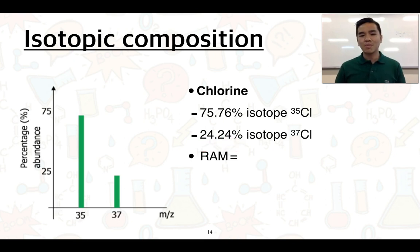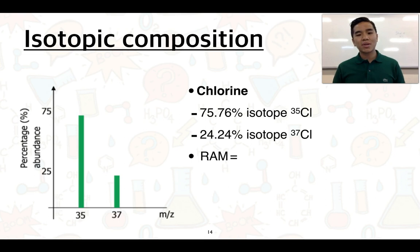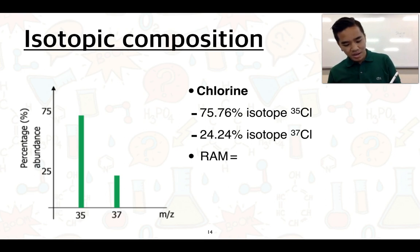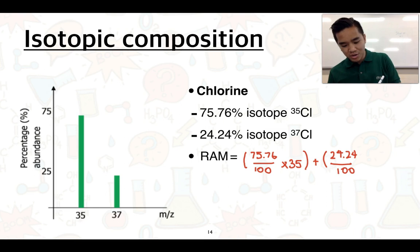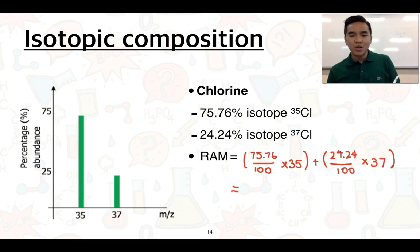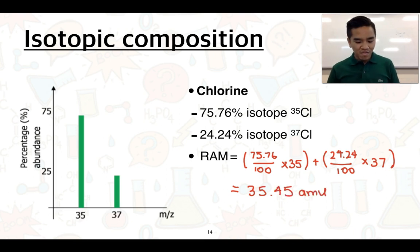To calculate the relative atomic mass of chlorine using the formula, we look at the percentage abundance of each isotope, convert it to a decimal, and multiply by the mass number. For chlorine: (75.76 ÷ 100) × 35, plus (24.24 ÷ 100) × 37. Doing that calculation gives an answer of 35.45 AMU.